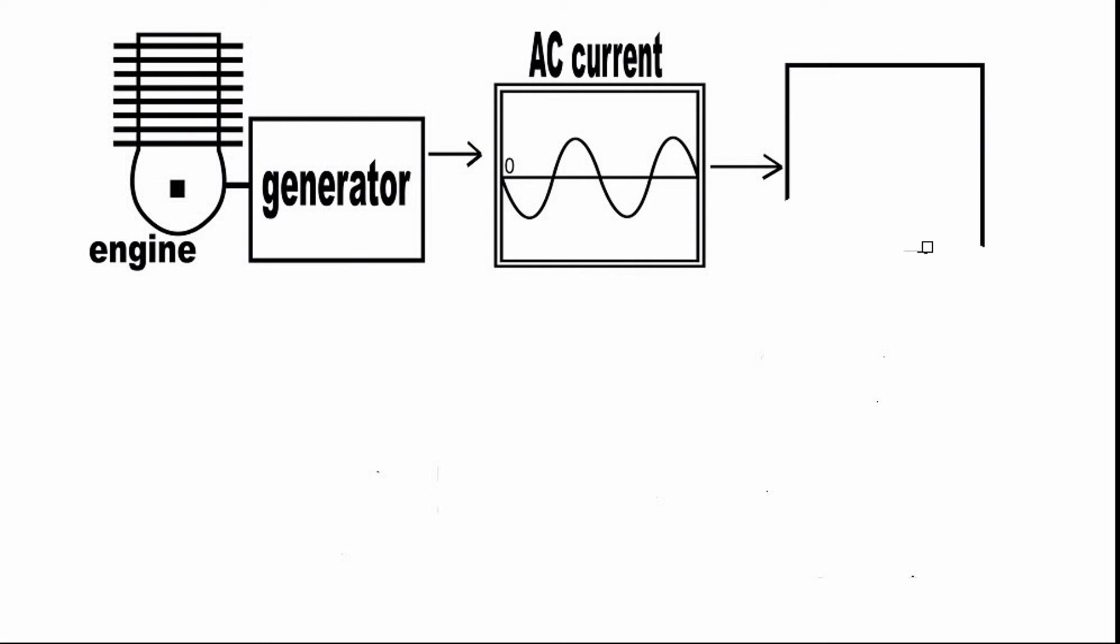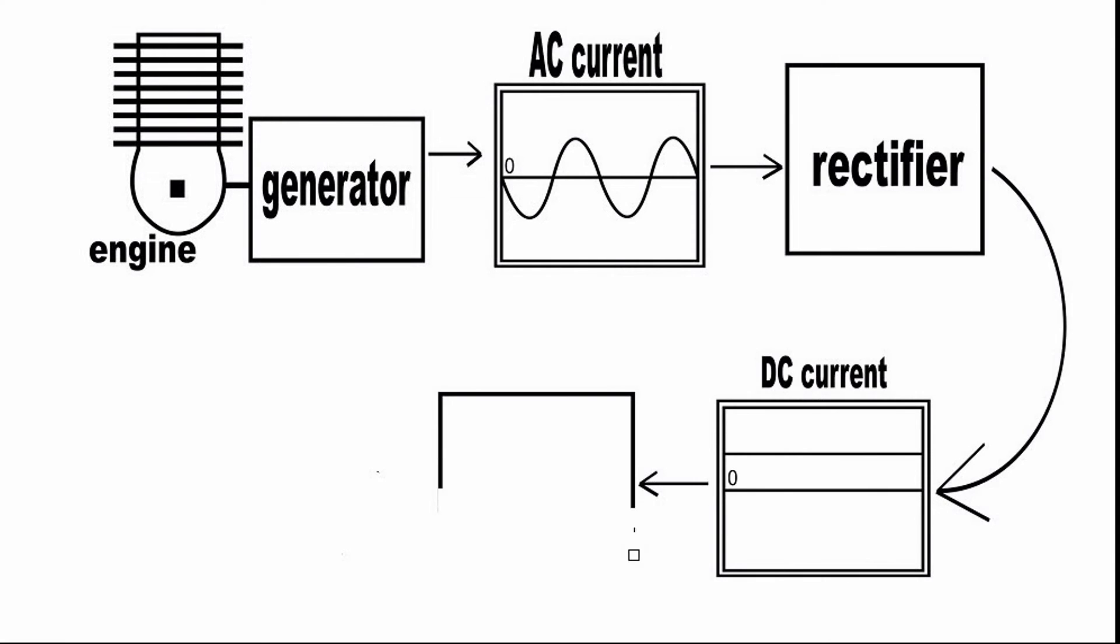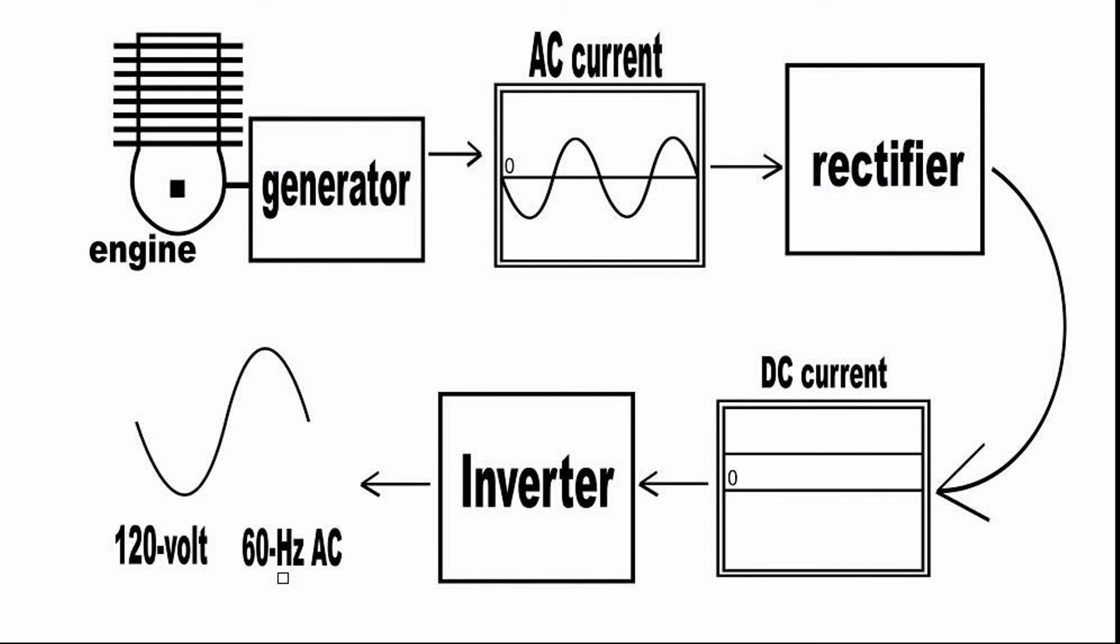The inverter generator generally outputs AC current like most conventional generators, but the current is then converted to DC current. An inverter module then turns the DC current back into standard 120 volt and 60 hertz clean AC current.